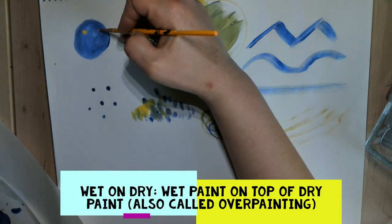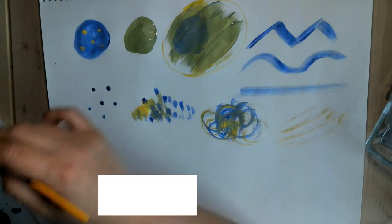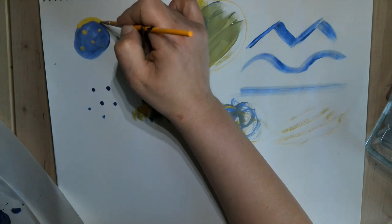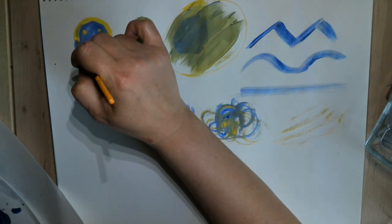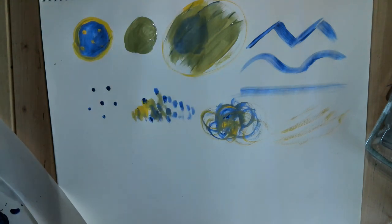And outlining is again similar - it's just you're outlining a shape that you've already made, but you want that shape to be dry so that it doesn't blend.